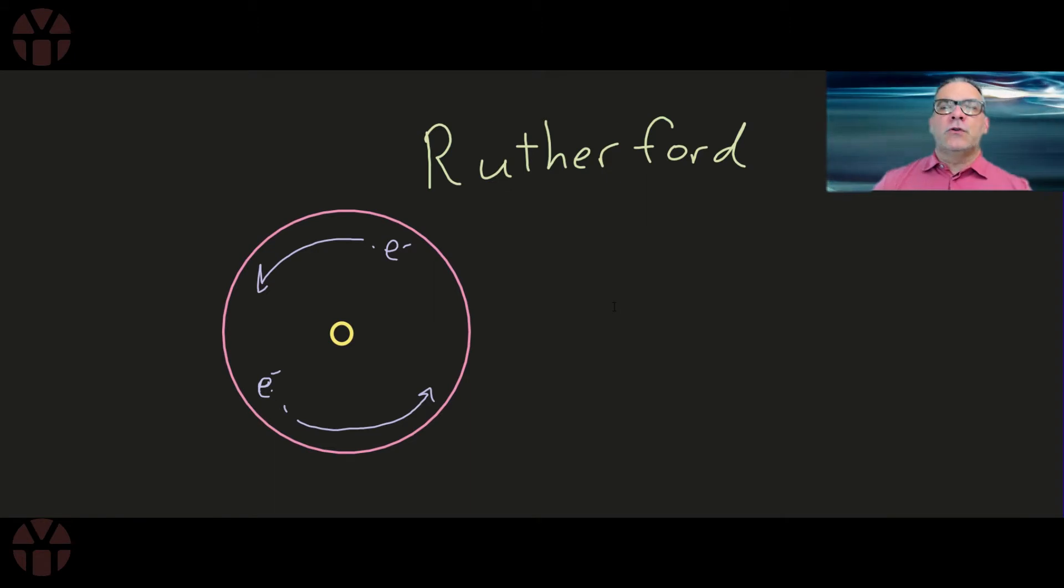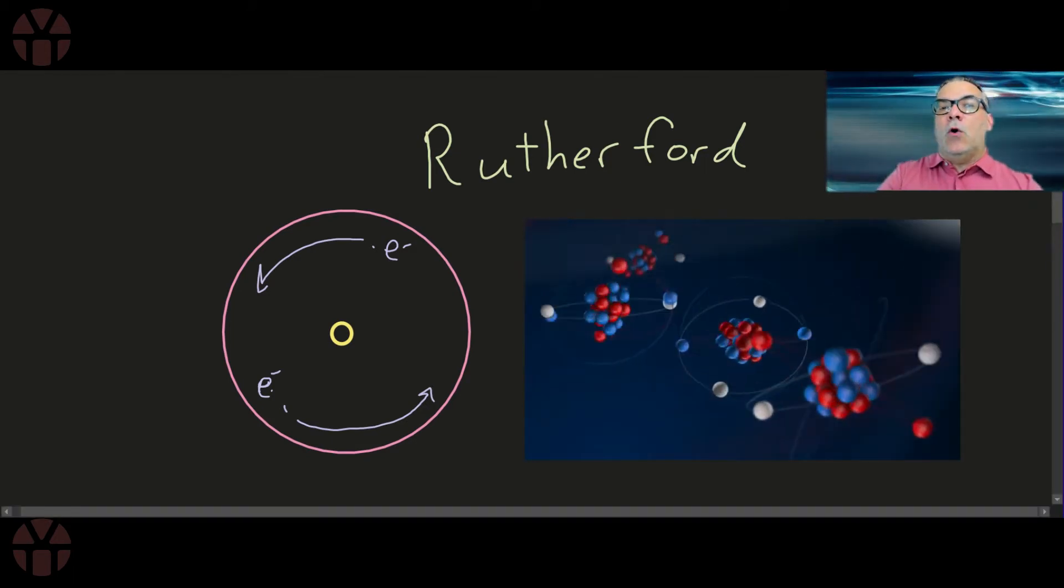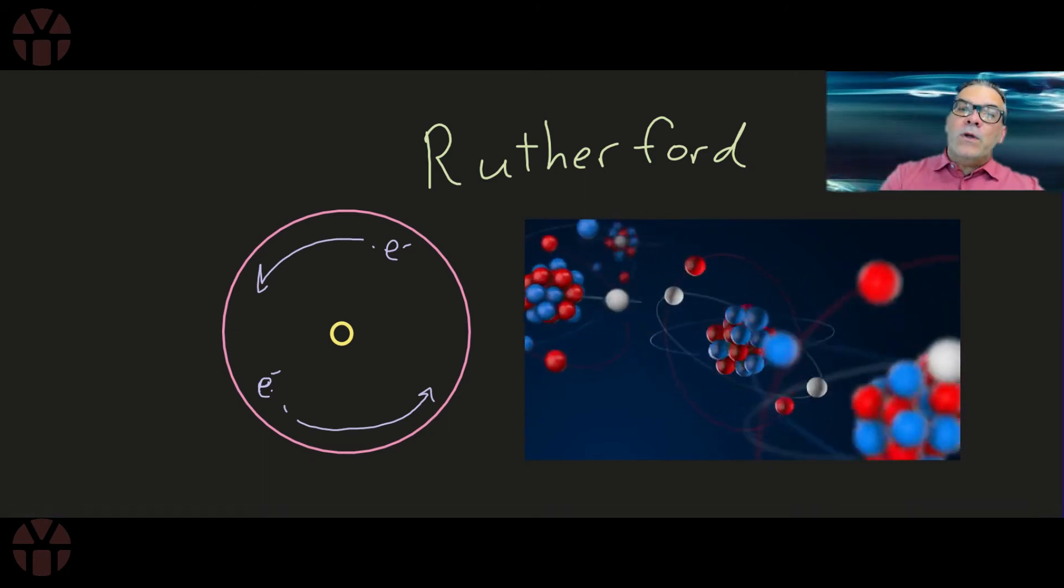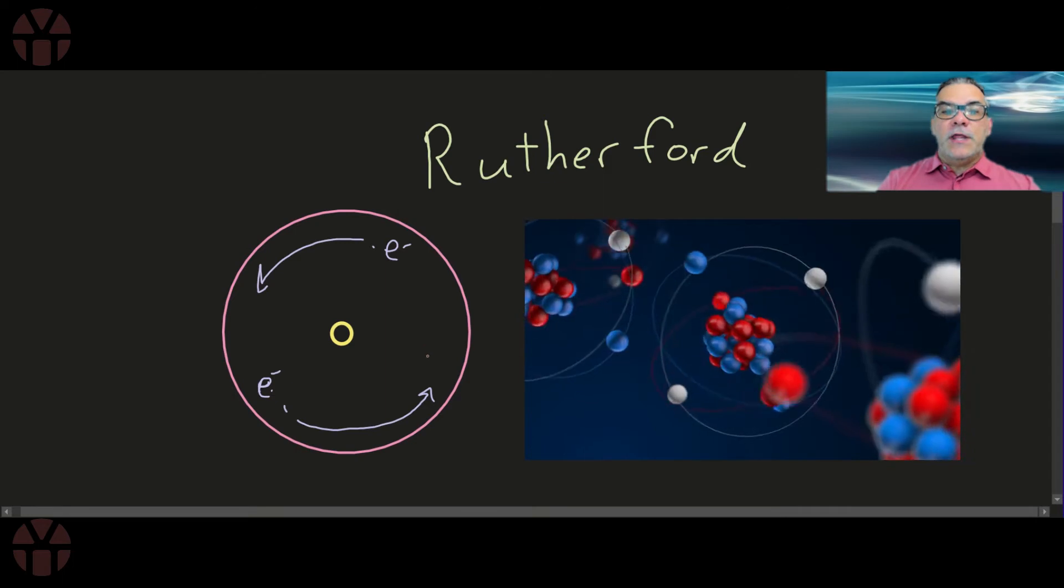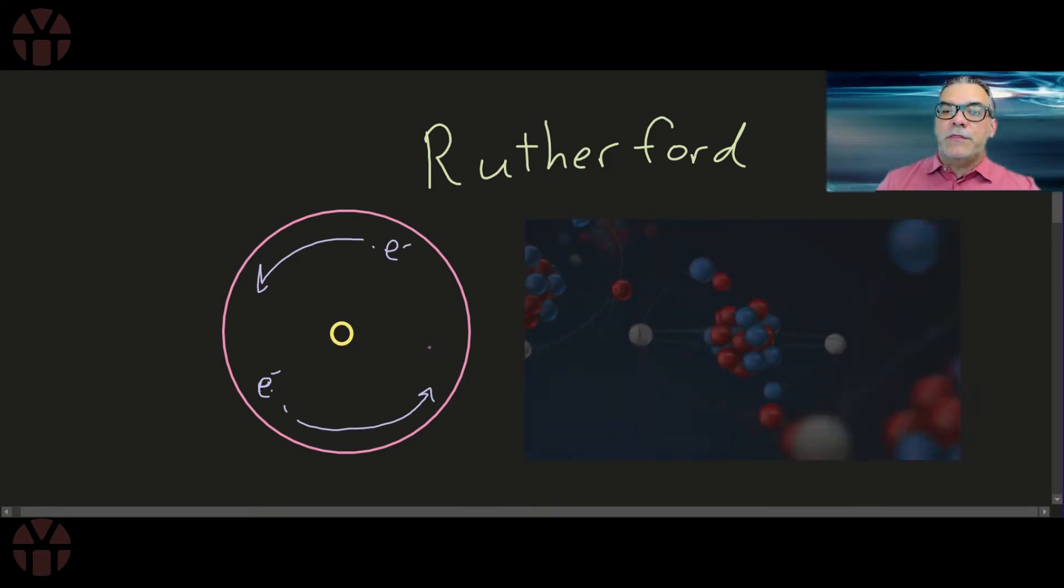So to refresh our memory, when we last spoke about Rutherford, if you recall, he was the one that came up with this idea of the nucleus, proved its existence, and said that in essence, the electrons are spinning around the nucleus. Great idea, brilliant, wonderful, but when scientists start to look at Rutherford, even Rutherford himself knows that there's a problem with this model.